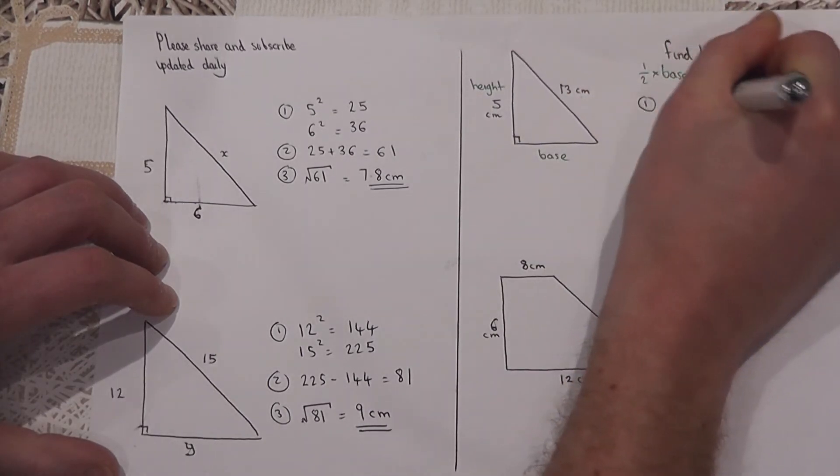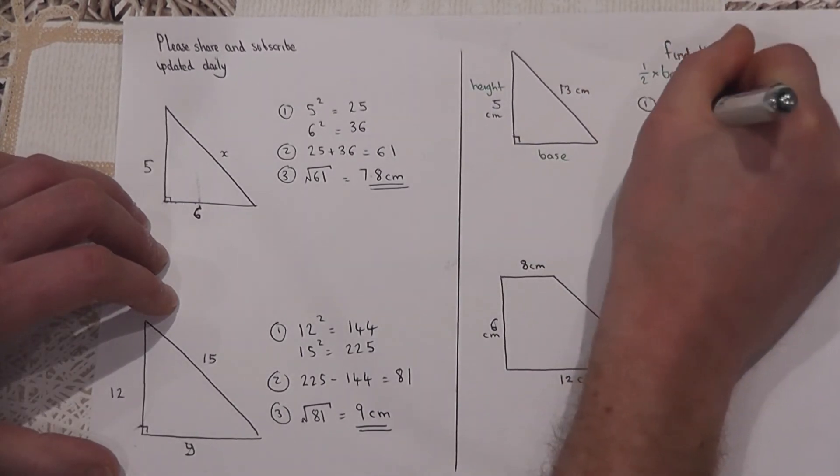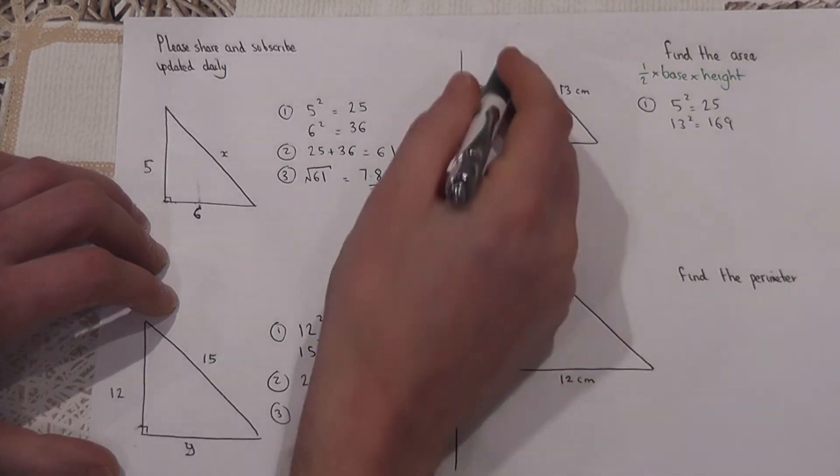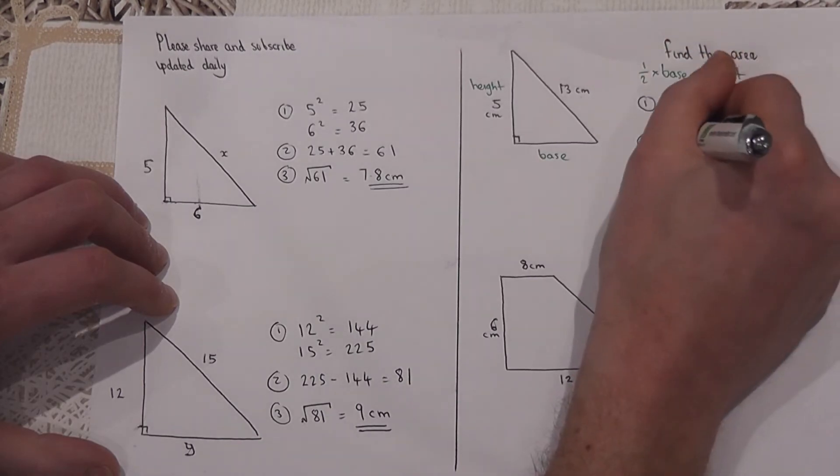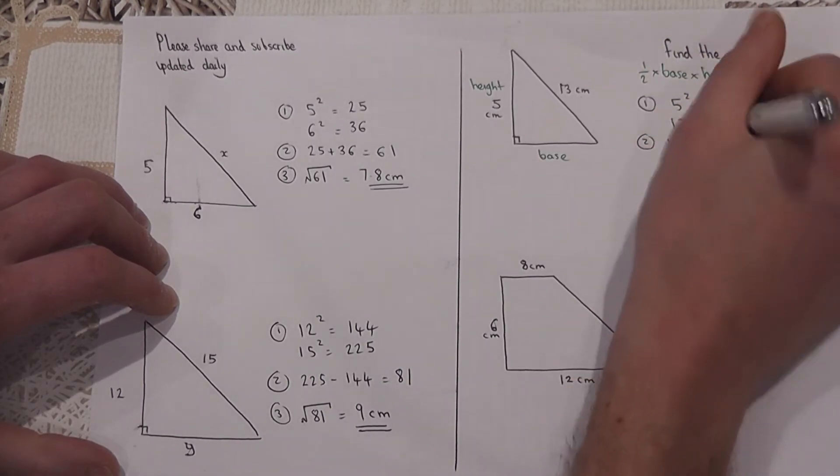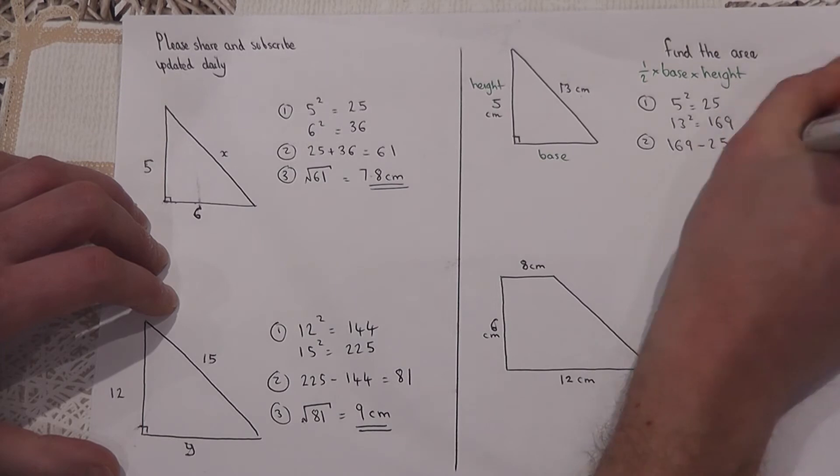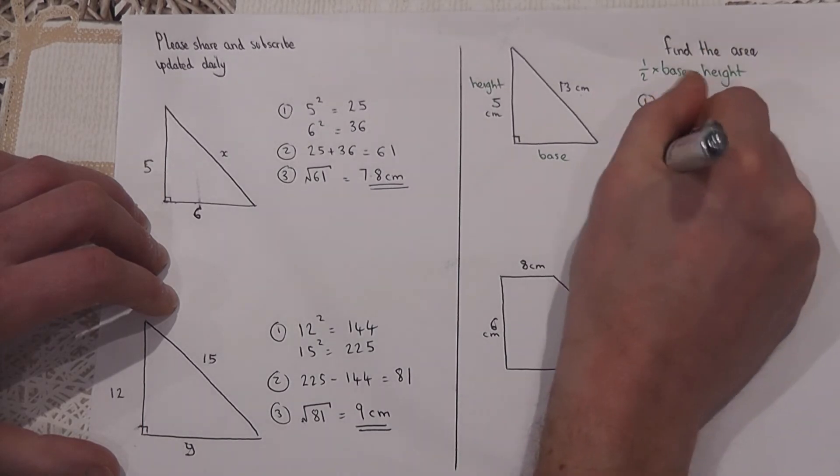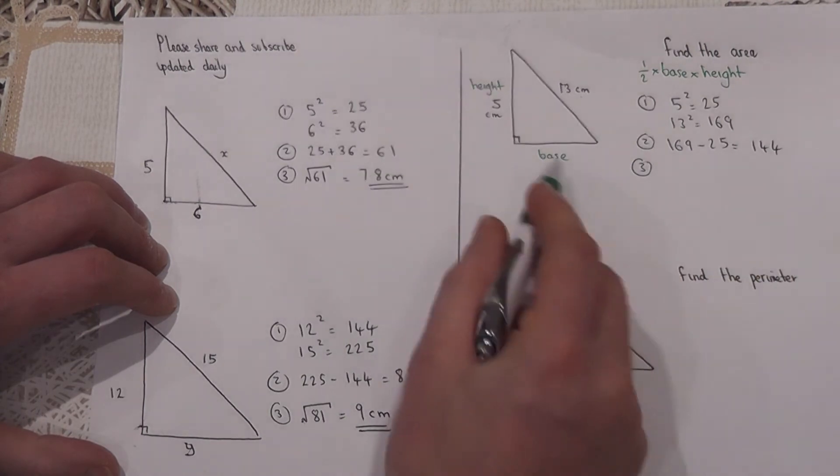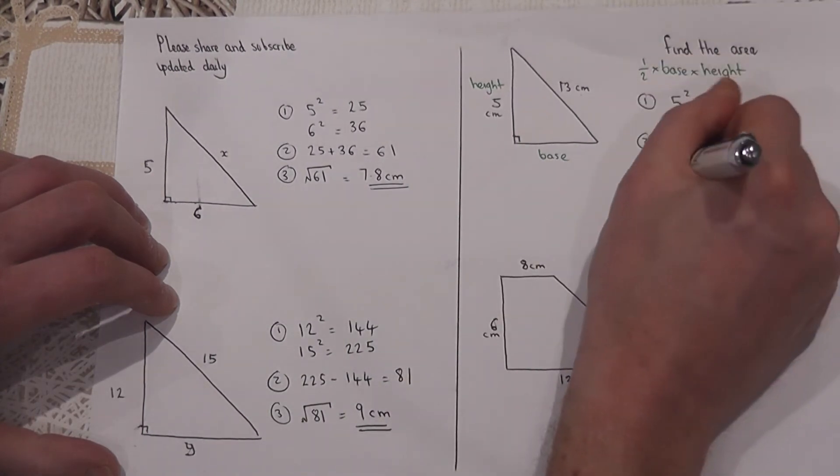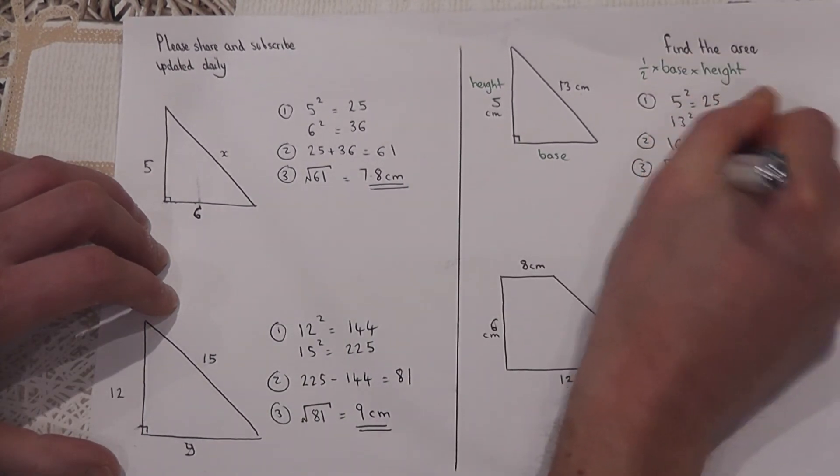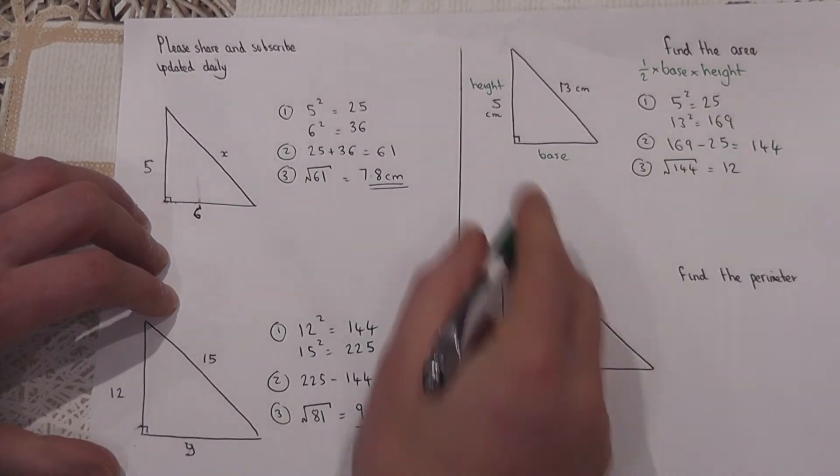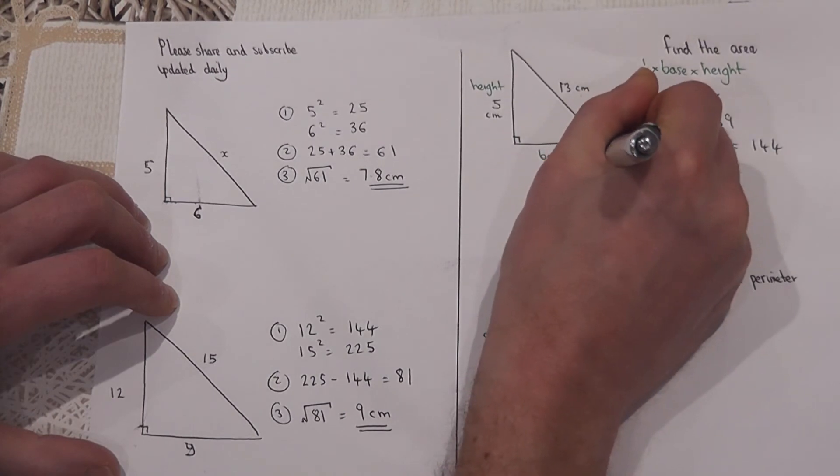I start off by squaring: 5 squared is 25, 13 squared is 169. We know the hypotenuse, so I subtract. 169, the big value, take away the small value, 25, which is 144. Then to finish off, to find the actual base, I'll do the square root of 144, which equals 12. So I found the base has a value of 12 cm.